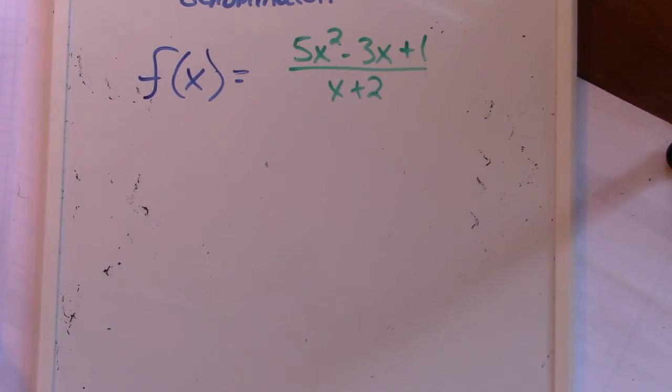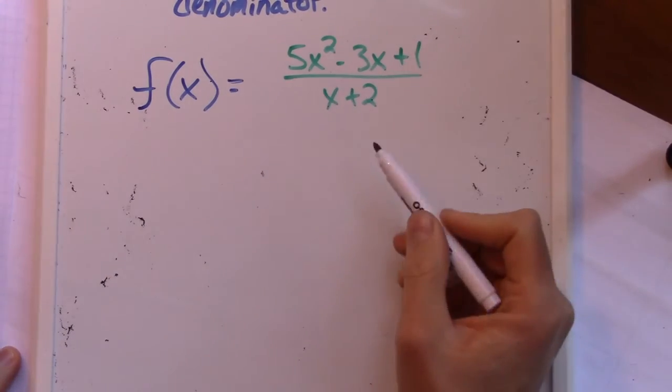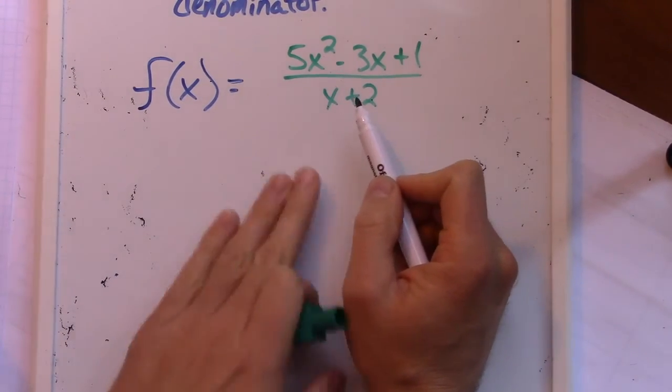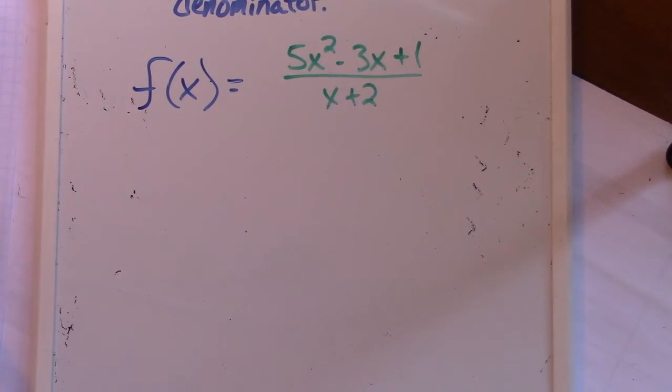So again, there's gonna be an oblique asymptote. Why? Because the degree of the numerator is 2, the degree of the denominator is 1. So 2 is 1 greater than 1. So there's gonna be an oblique asymptote. And now I need to divide to do that.